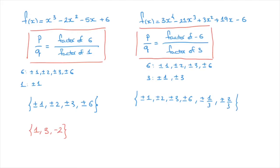And we're done — we've just listed all of the potential rational zeros for this polynomial function. You can go ahead and check, but we find that the rational zeros are negative 1, 1 third, 1, and 6. And indeed, all of these rational zeros can be found inside the list that we have here.